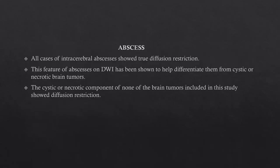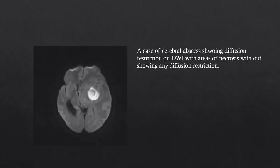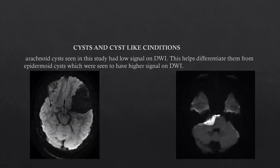Abscess. All cases of intracerebral abscesses showed true diffusion restriction. This feature helps differentiate abscesses from cystic or necrotic brain tumors, as none of the cystic or necrotic components of brain tumors in this study showed diffusion restriction. This is the image of an intracerebral abscess showing diffusion restriction on DWI. Cyst and cyst-like conditions: arachnoid cysts had no signal on DWI, helping differentiate them from epidermoid cysts which show high signal on DWI.